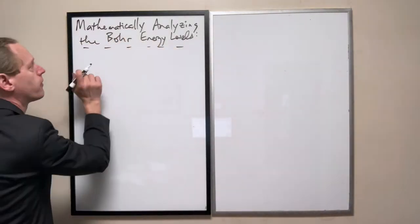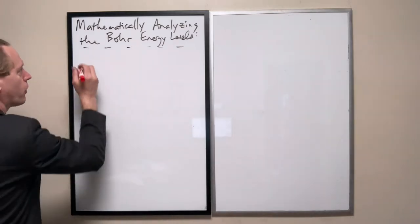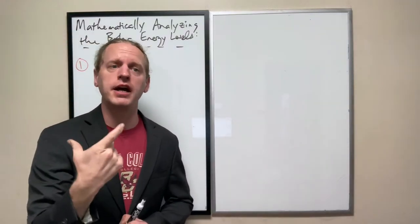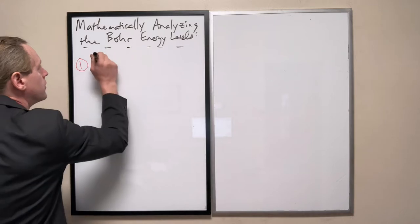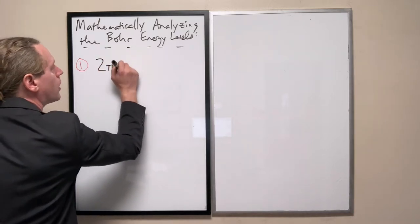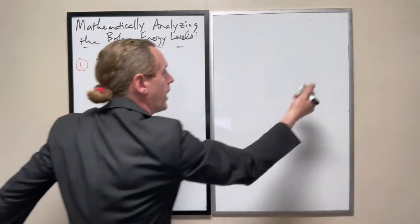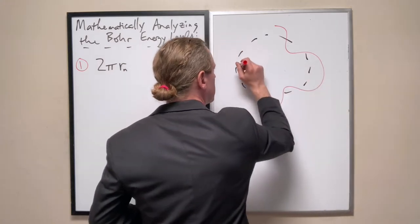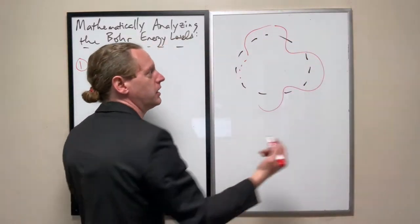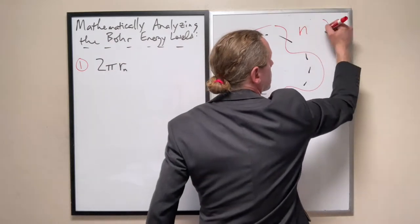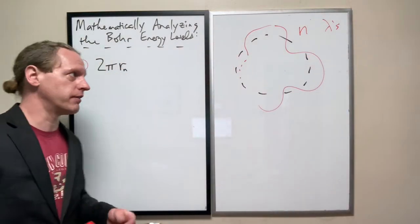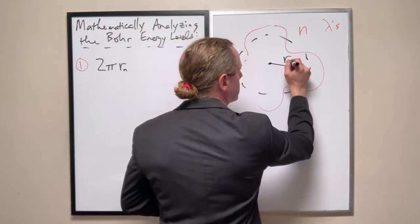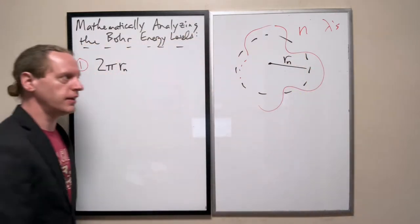So putting into equation form what we just did, and this is our equation 1, by saying that the circumference of a given energy level, which I will write as 2πRn, and I'll just kind of diagram that here to be clear, where we have some however many loops, so n lambdas. So that's the nth energy level, and specifically we're asserting that, or we're calling that radius R sub n.